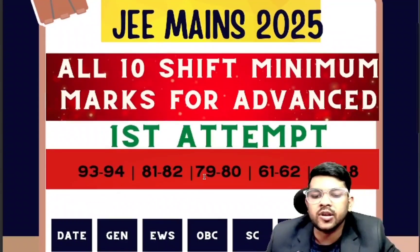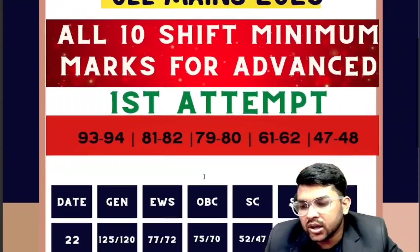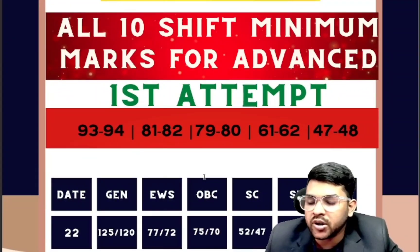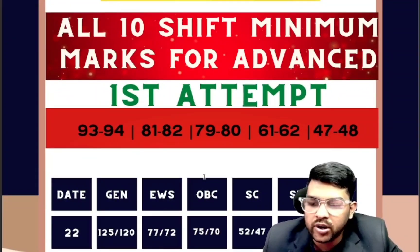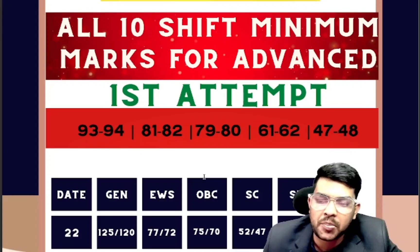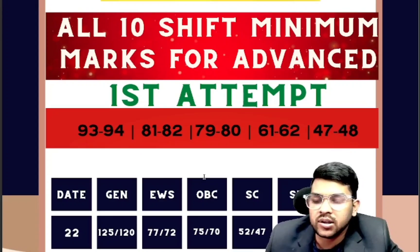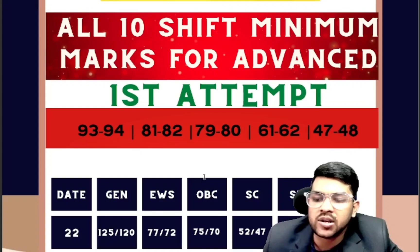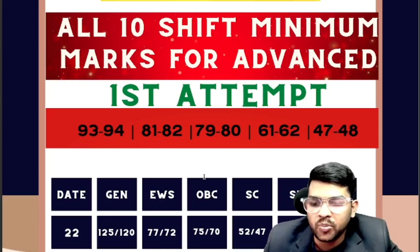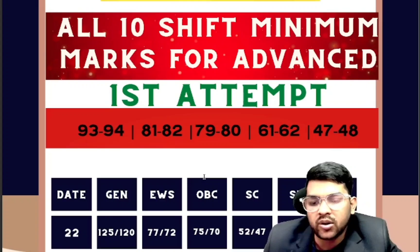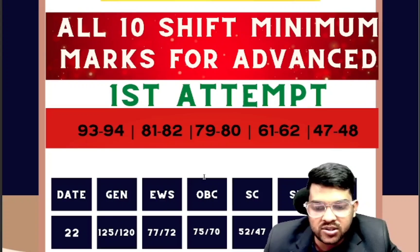Now let's check the marks. For January 22nd, General category requires 125 marks in the first shift and 120 marks in the second shift. EWS requires 77 and 72, OBC requires 75 and 70, SC requires 52 and 47, and ST requires 38 and 33 for the first and second shifts respectively.